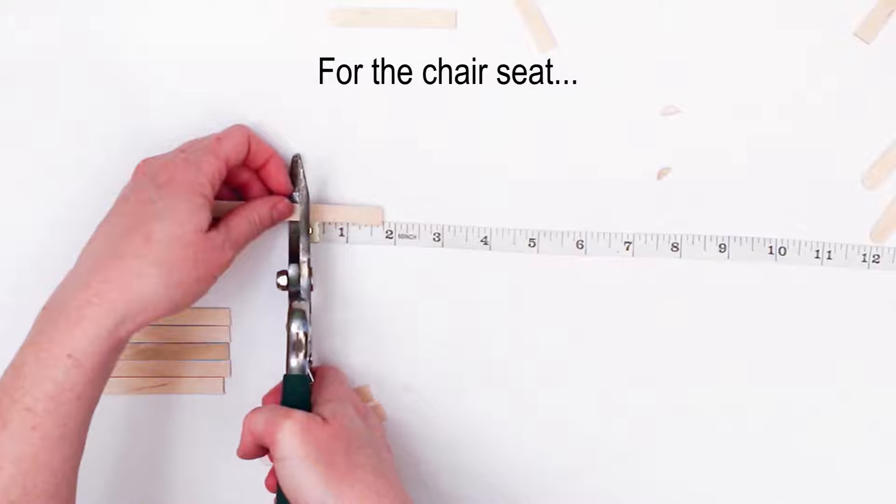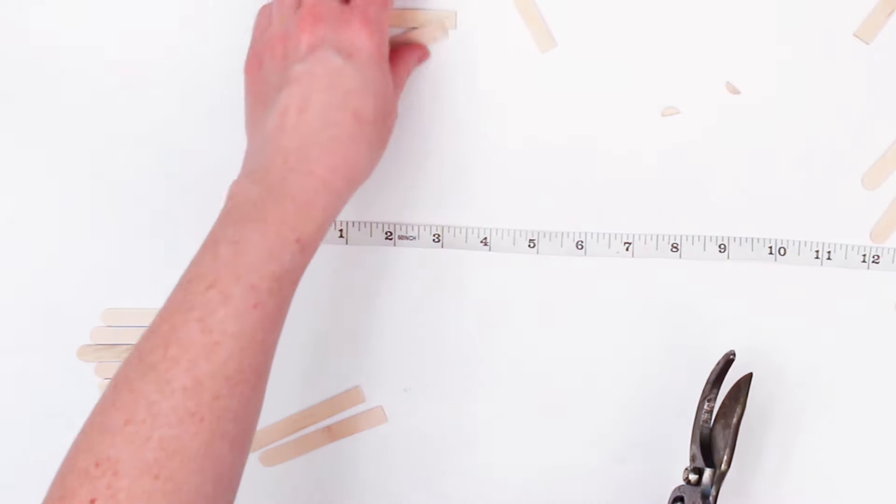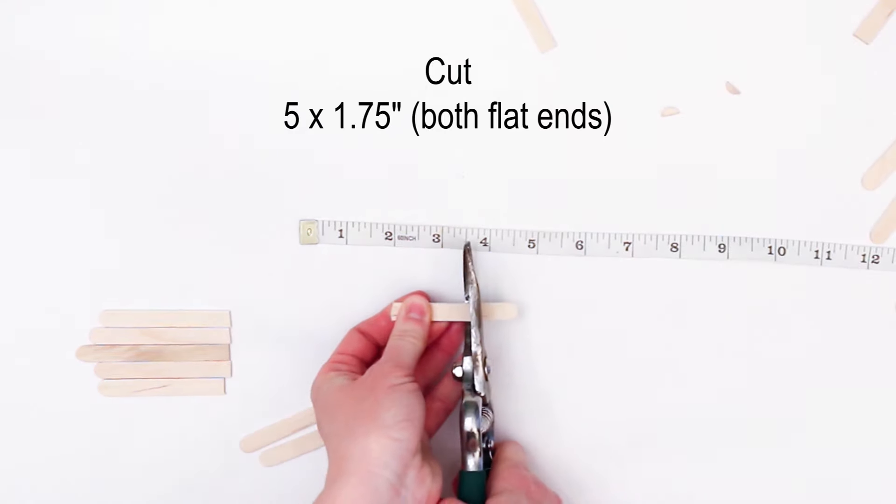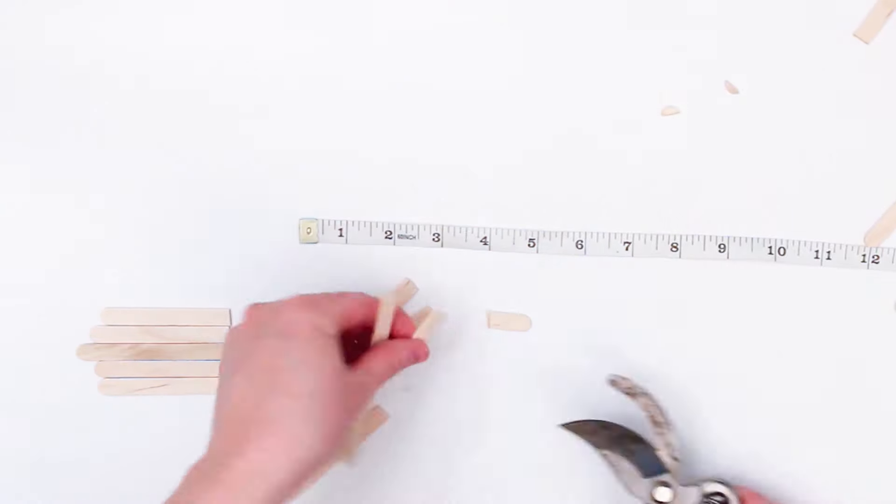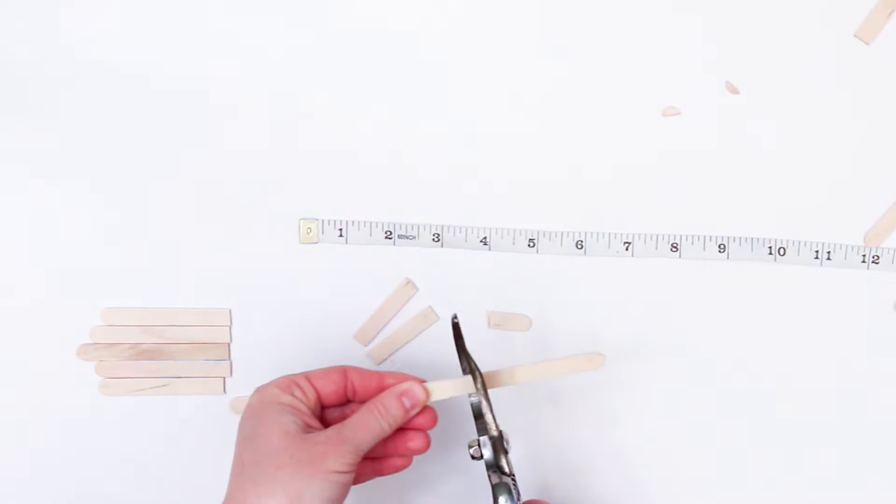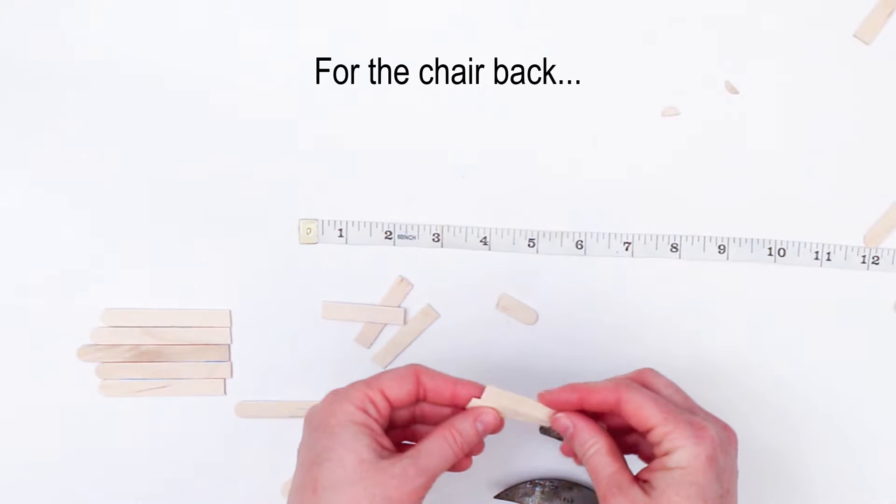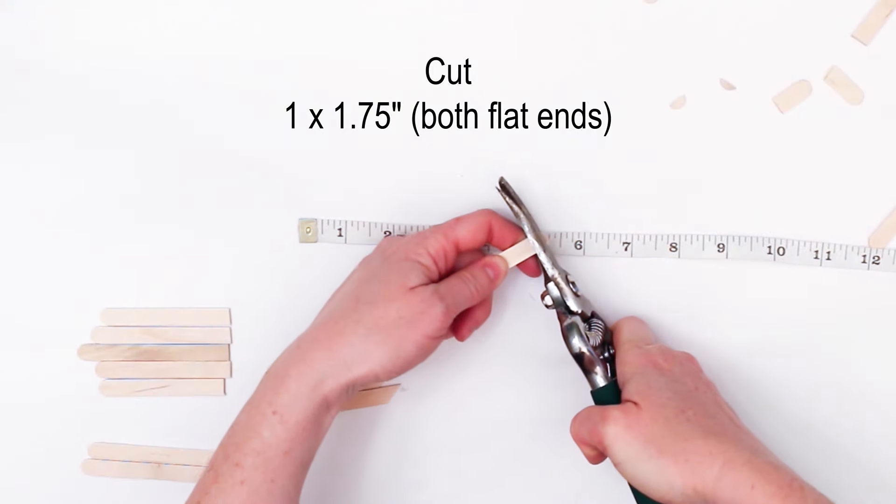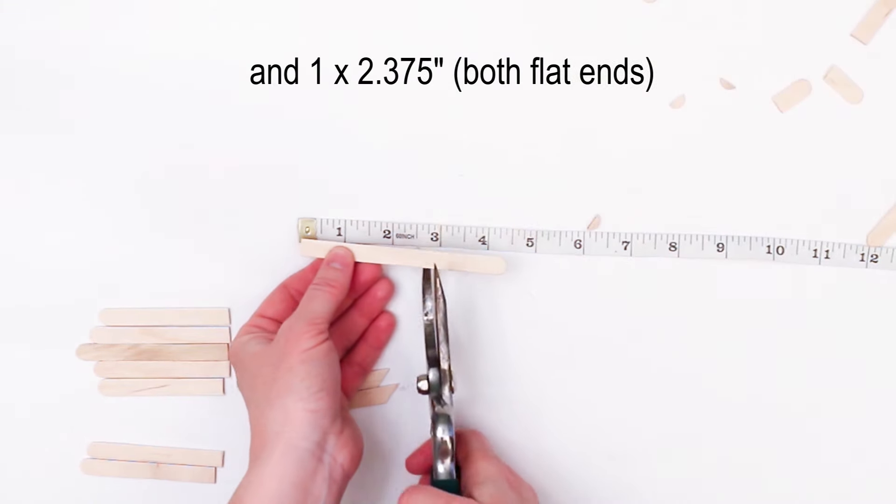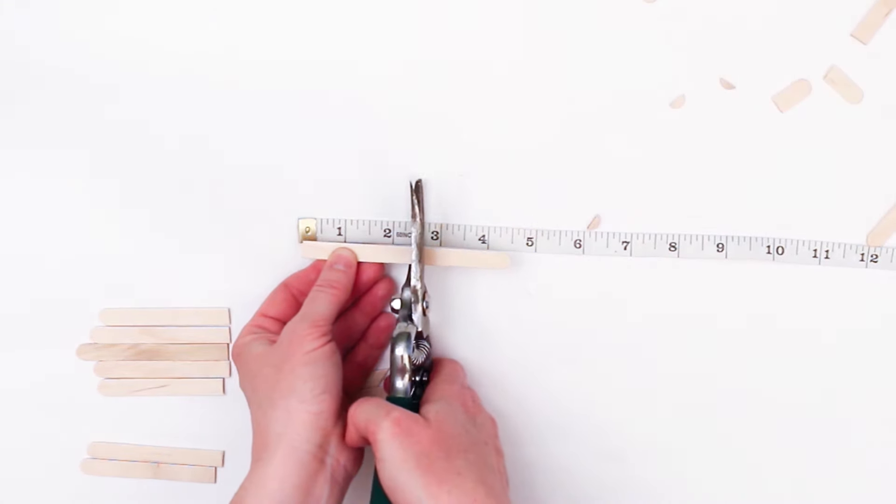For the chair seat we'll cut five pieces this time cutting both ends flat to one and three quarter inches long. While you're at it cut a sixth piece the same size which will be used on the chair back as well as one slightly longer piece with both flat ends also for the chair back.